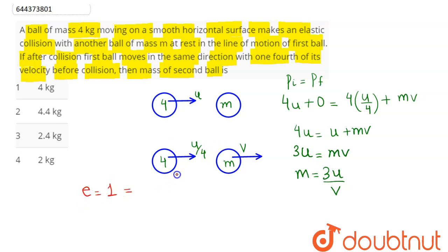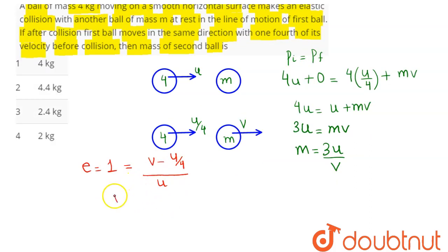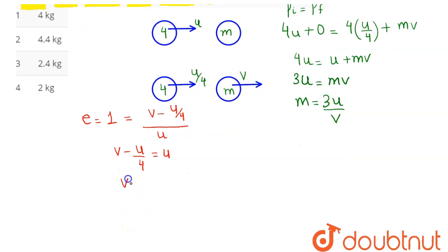which equals - velocity of separation is v minus u by 4 divided by velocity of approach which is u. Hence this comes as v minus u by 4 equals u. Hence v comes out to be 5u by 4, as v equals u plus u by 4, so 5u by 4. So the value of u by v comes out as 4 by 5.